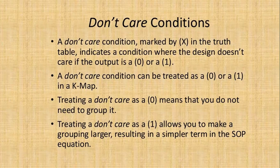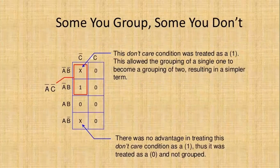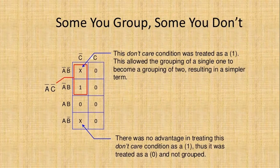When pairing or grouping, if you need some input to make a pair into a quad or a quad into an octet, you can use this don't care condition. Don't care is like a blinking light — it is on and off very fast. For SOP, we use don't care combined with ones. For POS, we use don't care combined with zeros. It's not necessary that every don't care condition must be used — only use it where it helps form a group.